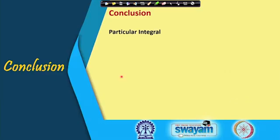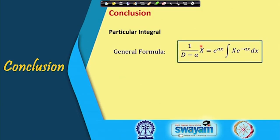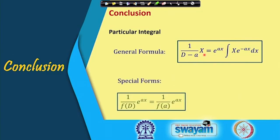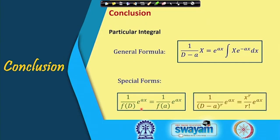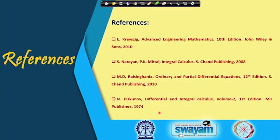In conclusion, we have seen the general formula for the particular integral using the inverse operator, which is useful when no shortcut is available. We have also discussed the special form e^(ax): replace D by a if f(a) ≠ 0, and if f(a) = 0, use (1/(D−a)^r)e^(ax) = x^r/r! · e^(ax). Thank you for your attention.